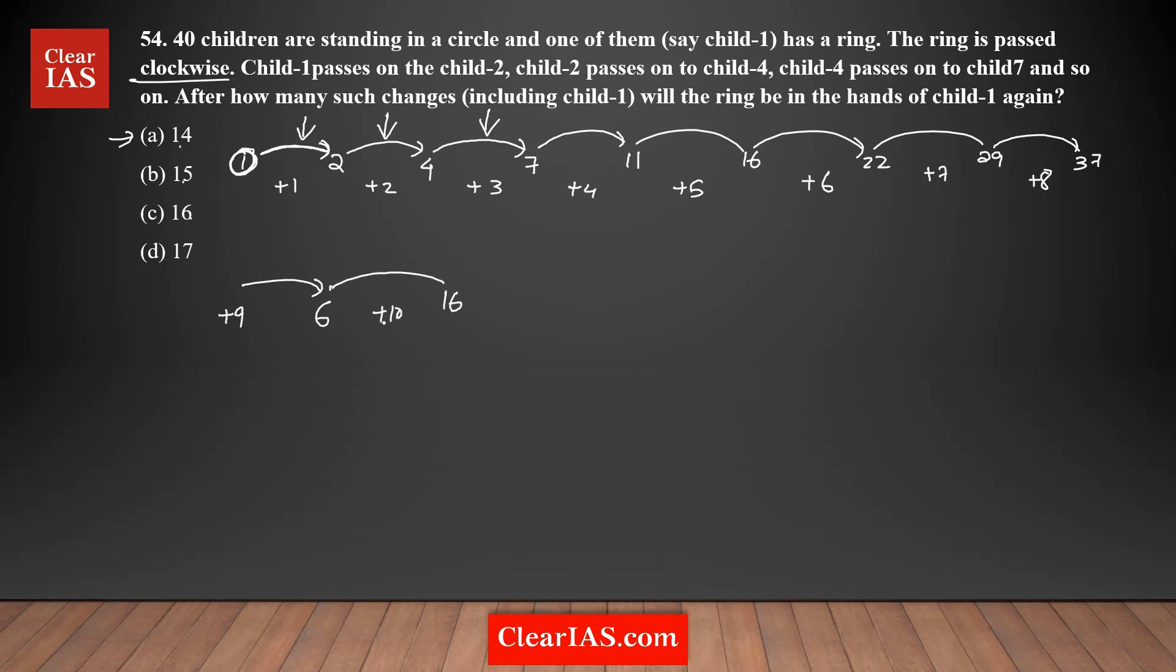Plus 10 is 16. The difference is greater now so it will finish early. Next is plus 11, so it's 27. Then next is plus 12, which is 39. Next is plus 13, so after 40 it's again back to 1, so it's the 12th person. Again I need to proceed until you're getting one here. Plus 14 is 26, next is plus 15. After 40, plus 14 is 40, after that one more it's 1. The ring is back with child one.